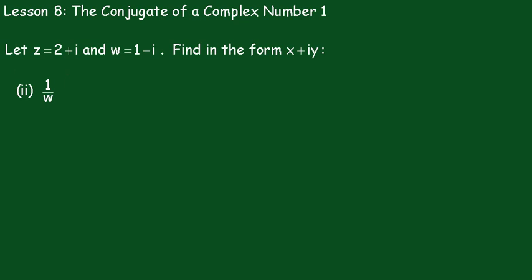Now in part 2 we have to work out the reciprocal of w. So we'll write that down now that that's equal to 1 over 1 minus i. Now we multiply numerator and denominator by the conjugate, that's 1 plus i.